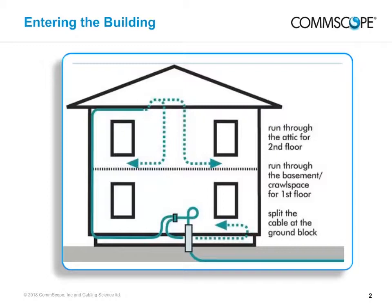If the crawl space or basement presents problems, another option is to run the cable around the outside of the residence. Be sure to use an outdoor-rated cable. Try to follow the architectural lines of the house and run the cable where the foundation meets the bottom of the exterior walls, or vertically along the corner trim or under the soffit. You can bury cable next to the foundation. Avoid placing cable in direct sunlight as that will accelerate cable aging. Consider a non-metallic raceway to hide and protect the exterior cable.